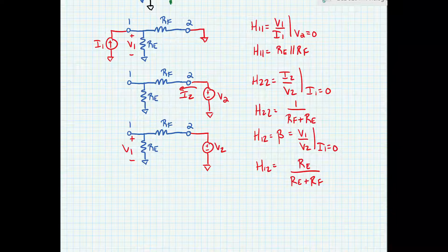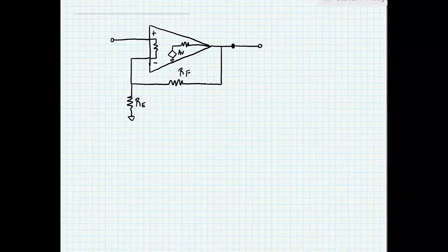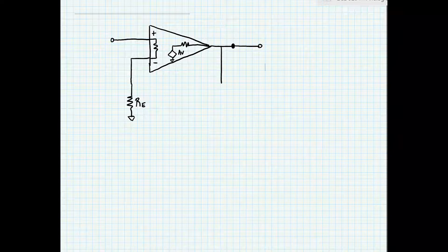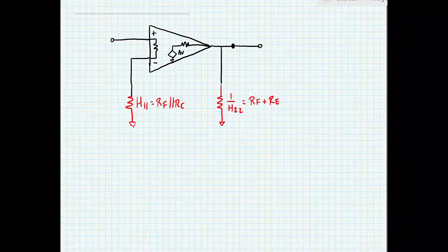Now we have our feedback loading and feedback factor determined, so we're going to load the amplifier circuit and calculate the open-loop gain. Here's our original amplifier circuit. We need to break the feedback loop and add our loading. With this amplifier, we load the input with H11, which is RF in parallel with RE, and we load the output with 1 over H22, which is RF plus RE.